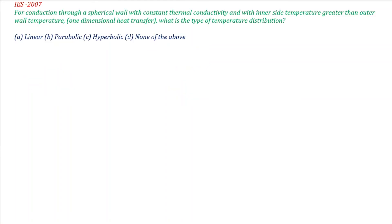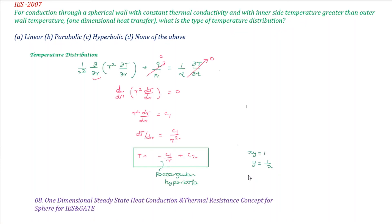The next question is IS-2007: for conduction through a spherical wall with constant thermal conductivity, with inner surface temperature greater than outer wall temperature, one-dimensional heat transfer — what is the type of temperature distribution? The temperature distribution for a sphere is hyperbolic. If you know this concept, it takes just 5 seconds to answer. Very simple once the concept is understood.